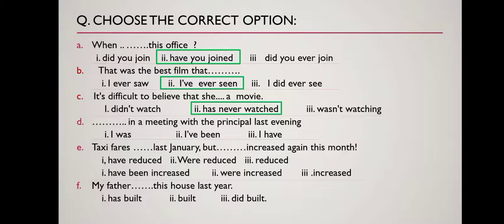Sentence D: '[...] in a meeting with the principal last evening.' Here 'last evening' is a clear indication of past time, so we cannot use present perfect tense. We must choose a past tense option: 'I was in a meeting with the principal last evening.' Sentence E: 'Taxi fares [last January]...' Options: 'were reduced,' 'have reduced,' or 'reduced.'